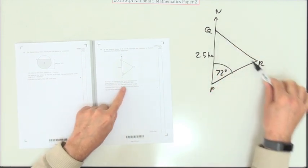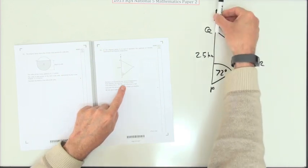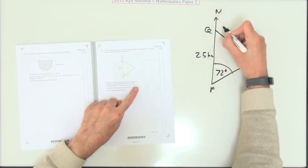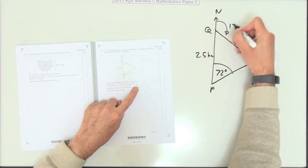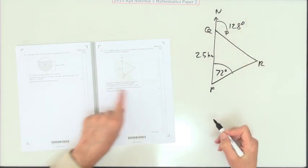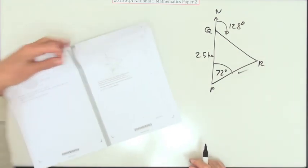From Queenstown the bearing of Rushton - the bearing means from north you turn 128 degrees clockwise. Calculate the distance between Port Leigh and Rushton. That's what I want.